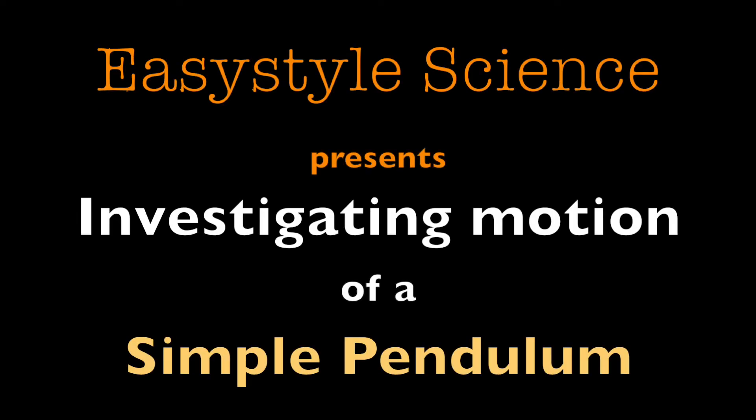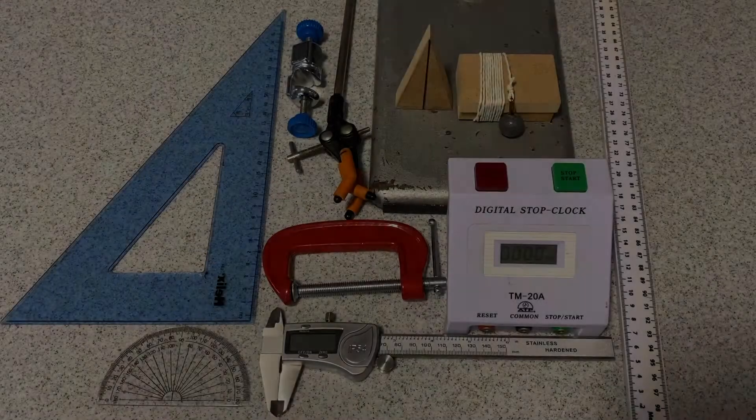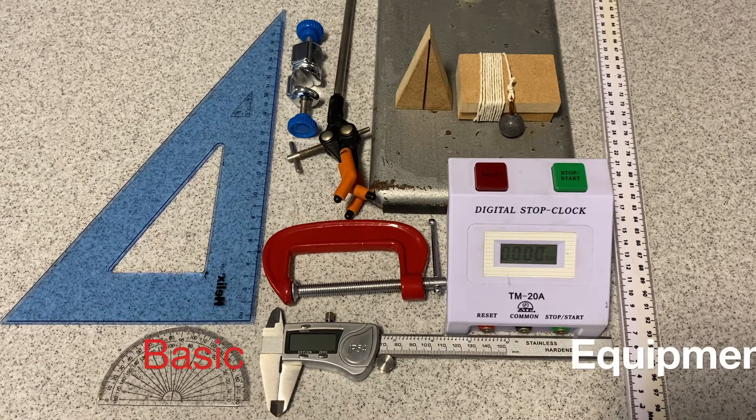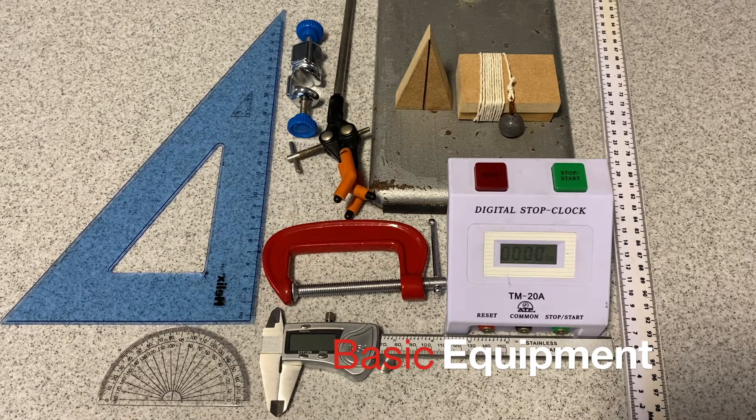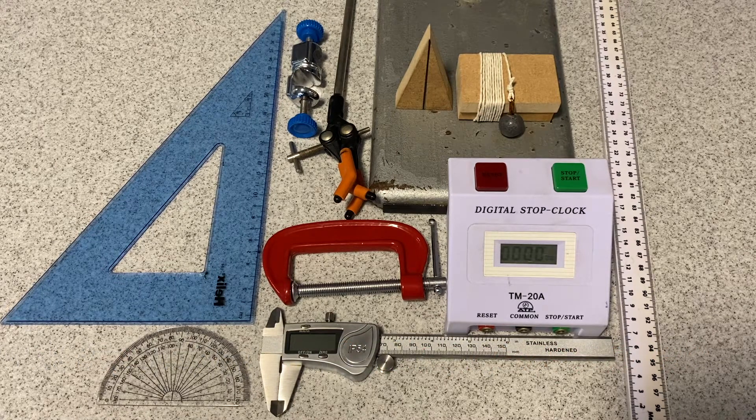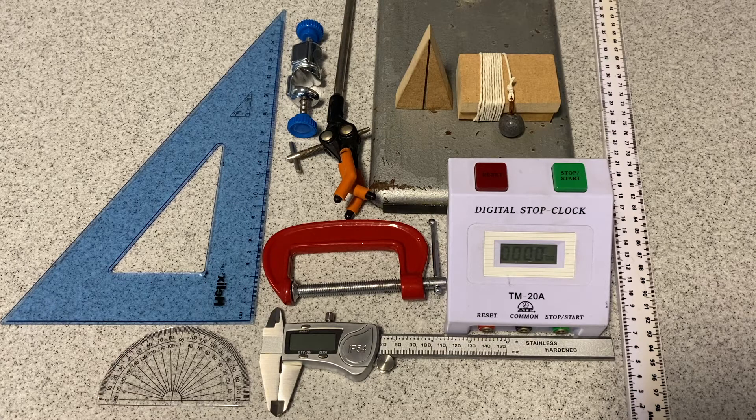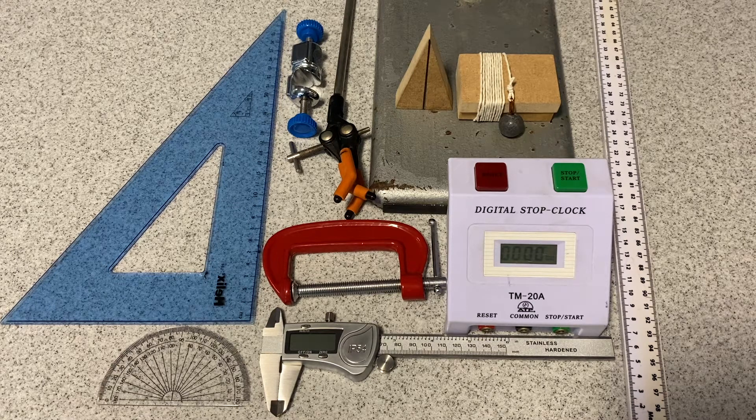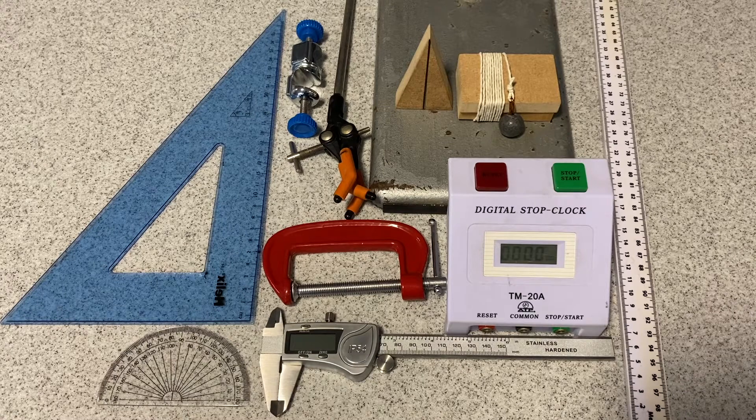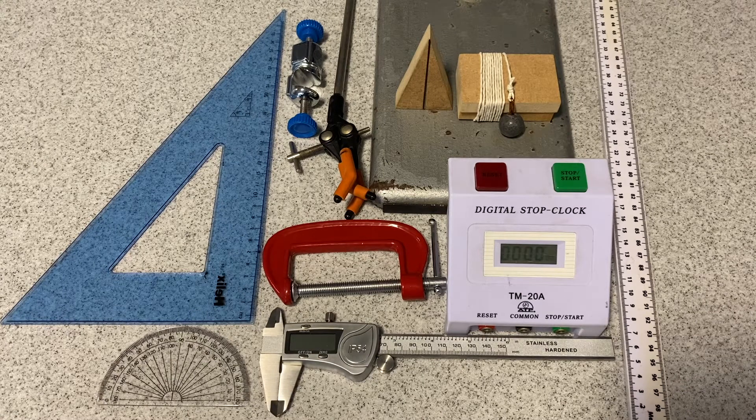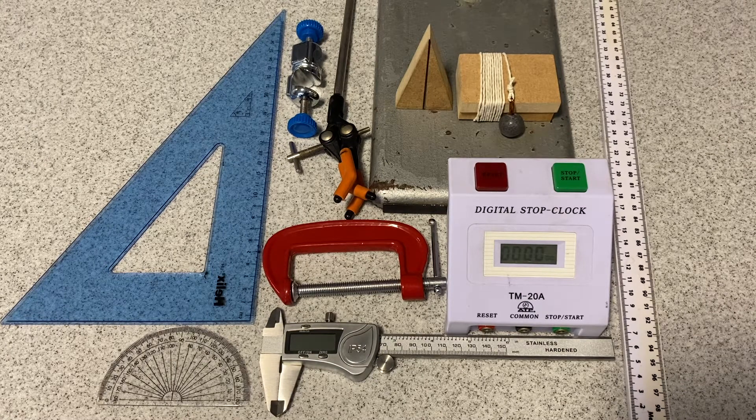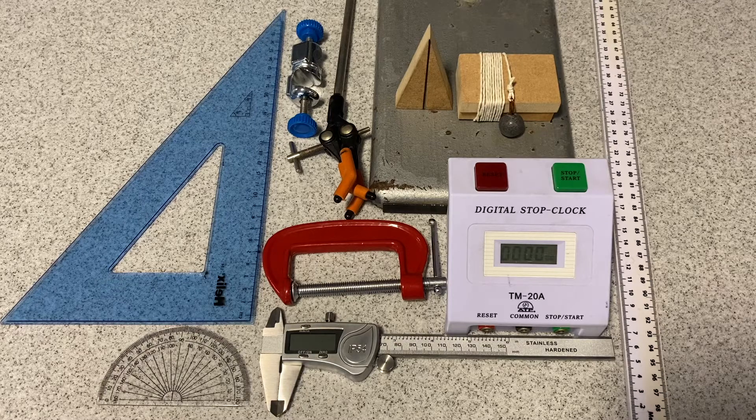Investigating the motion of a simple pendulum. To carry out this investigation you will be provided with the following equipment: a protractor, a set square, a digital vernier caliper, a g-clamp, boss and clamp, a fiducial marker, a pendulum mounted on two boards, a stop clock, and meter ruler.